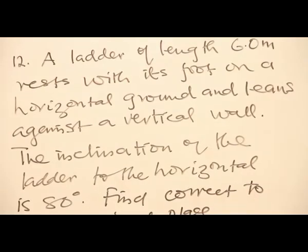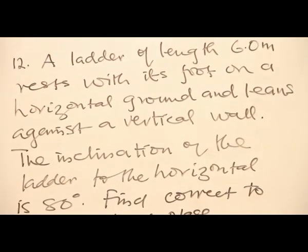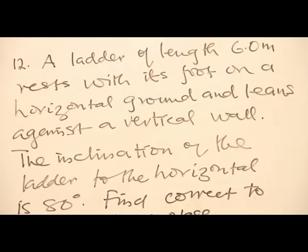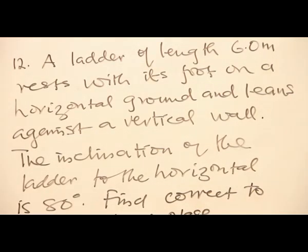Example 12: A ladder of length 6.0 meters rests with its foot on the horizontal ground and leans against a vertical wall. The inclination of the ladder to the horizontal is 80 degrees.